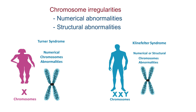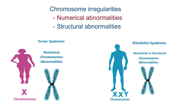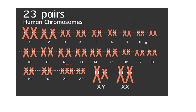Chromosome irregularities occur and are categorized into numerical and structural abnormalities. Numerical abnormality is when an individual is missing one of the chromosomes from a pair, or has more than two chromosomes instead of a pair. Down syndrome is a condition caused by numerical chromosomal abnormality, with the presence of three copies of chromosome 21 rather than two.